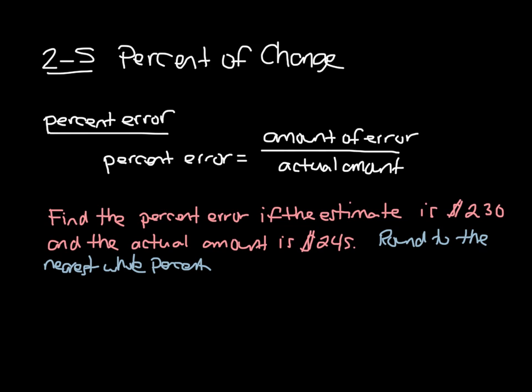Well, very similar to our percent of changes, when you're looking for percent increase, percent decrease, our first step is going to be to find the amount of error. Well, to find the amount of error here, we'll take our $245 from our actual amount and subtract our estimate to get $15.